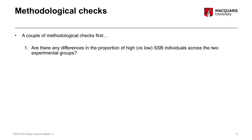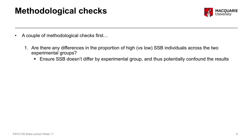The first check is that we want to see if there are any differences in the proportion of high versus low somatic symptom burden individuals across our two experimental groups — making sure that everybody in the mindfulness group doesn't happen to also have a very low somatic symptom burden, whereas everybody in the control group doesn't happen to have a very high somatic symptom burden.